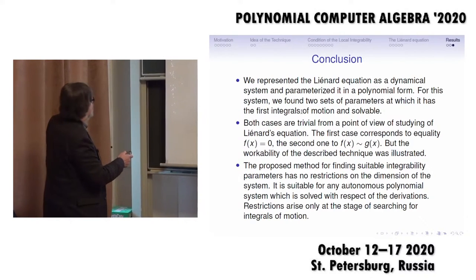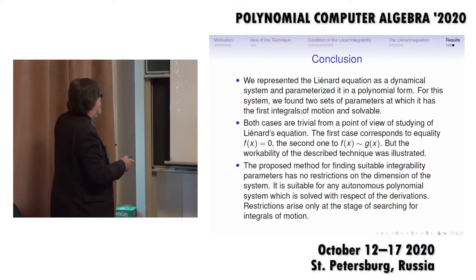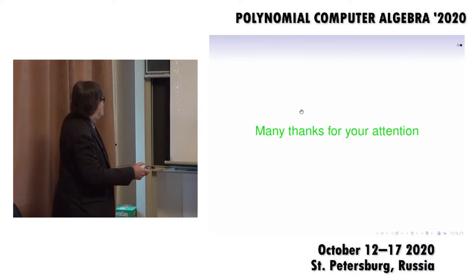In conclusion, we represent the Liénard equation as a dynamical system. Both cases which we find are trivial from the point of view of studying the Liénard equation, which has been investigated for almost 100 years. The first case corresponds to f(x) = 0, the second to f(x) proportional to g. But the applicability of the described technique was illustrated. The proposed method for finding suitable integrability parameters has no restrictions on the dimension of the system. It is suitable for any autonomous polynomial system which is solved with respect to the deviations. Restrictions arise only at the stage of searching for integrals of motion. We also saw the Hénon-Heiles system with this. Many thanks for your attention.